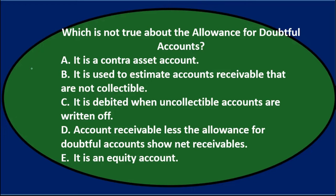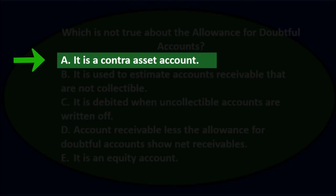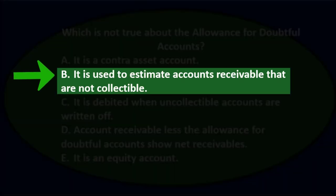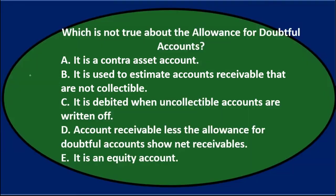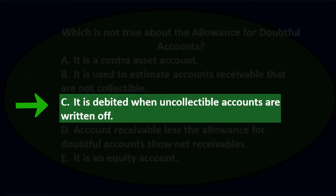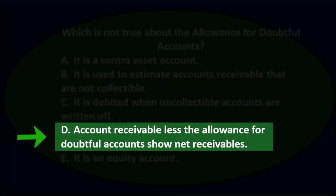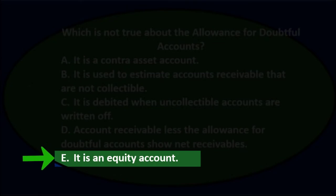Next question: Which is NOT true about the Allowance for Doubtful Accounts? A. It is a Contra Asset Account. B. It is used to estimate accounts receivable that are not collectible. C. It is debited when uncollectible accounts are written off. D. Accounts receivable less the Allowance for Doubtful Accounts shows net receivables. Or E. It is an equity account.